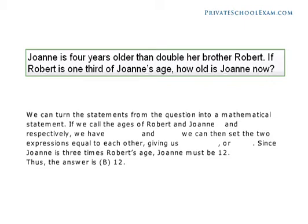Joanne is four years older than double her brother Robert. If Robert is one-third of Joanne's age, how old is Joanne now? We can turn the statements from the question into a mathematical statement. If we call the ages of Robert and Joanne R and J respectively, we have J equals 2R plus 4, and 3R equals J. We can then set the two expressions equal to each other, giving us 2R plus 4 equals 3R, or R equals 4. Since Joanne is three times Robert's age, Joanne must be 12. Thus, the answer is B, 12.